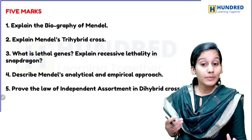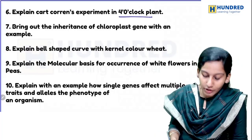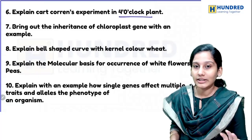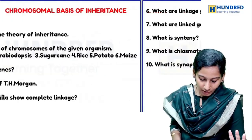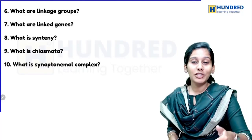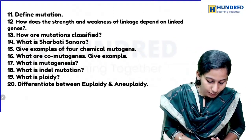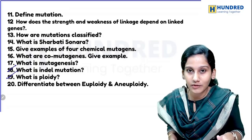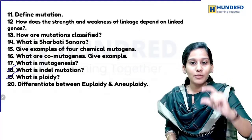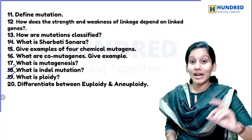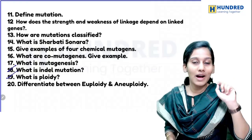The law of independent assortment and dihybrid cross — very, very important. That includes Mirabilis jalapa inheritance pattern. From chromosomal basis of inheritance: theories, linkage groups, linked genes, synaptonema complexes. Mutation and ploidy are the super-important questions from this chapter. Ploidy types and definitions can be used for two or three marks; complete ploidy with significance can be five marks.